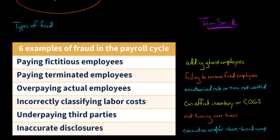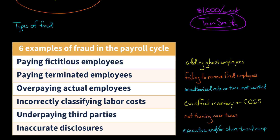Tom doesn't actually exist. Tom wasn't hired by the company — Tom is just a name that dishonest person made up. They add that person to the payroll and have Tom getting paid, let's say, $1,000 a week. What happens then is that the dishonest person is going to take that $1,000, because Tom doesn't even exist. The fraudster is going to steal the $1,000 that is supposedly going to Tom Smith.